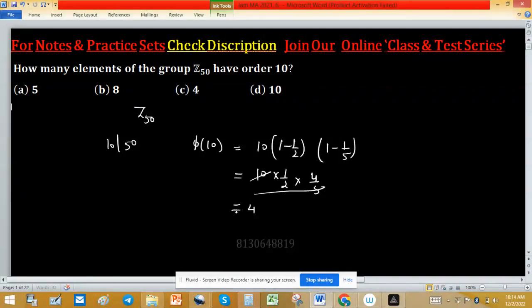So there are four elements of order 10. But sometimes the problem may be asked in this manner, how many subgroups of Z 50 have? To find number of subgroups, first observe that Z 50 is cyclic.